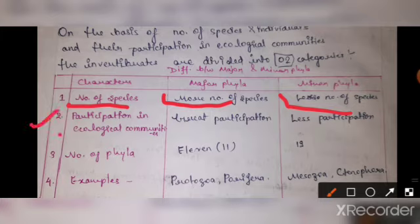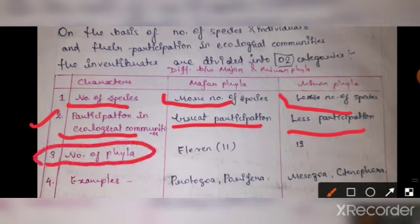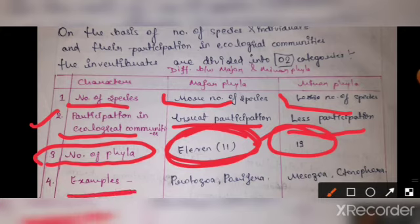The second character is participation in ecological communities. As the name suggests, major means greater participation in ecological communities, while minor phyla have less participation. The third point is the number of phyla: 11 phyla come under major phyla, and 19 phyla come under minor phyla.